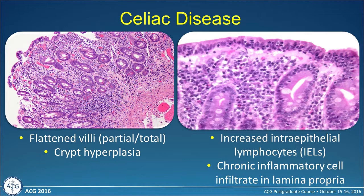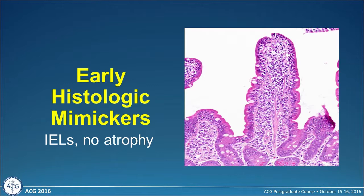Compare that with someone with celiac disease. On the left, you see someone with very flattened villi, total villus atrophy, and elongation of the crypts. On the right side, you see an excess number of intraepithelial lymphocytes per epithelial cell, and a very dense chronic inflammatory cell infiltrate in the lamina propria.